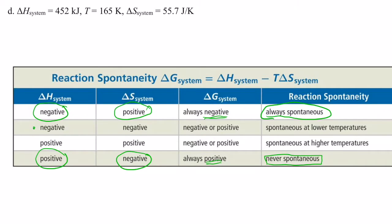So this example: when delta H is negative, it's exothermic — nature does like that. And delta S is negative, that means it's becoming less disordered — nature doesn't like that. That means it's spontaneous sometimes, and it turns out it's spontaneous at low temperatures. So delta G could be negative or it could be positive; we have to use the Gibbs free energy equation to determine that.